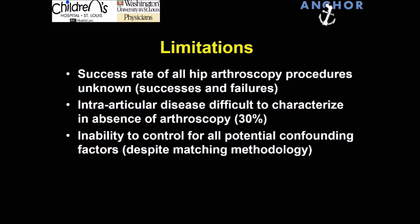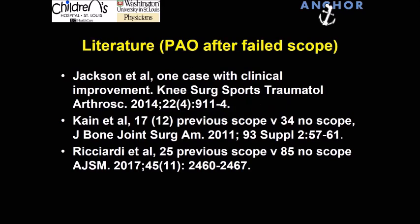Limitations of the study are significant. We don't have the success rate of all hip arthroscopy procedures being done — we're just looking at a subgroup that failed hip arthroscopy. Intra-articular disease staging is incomplete because only about 30% of patients had combined arthroscopy at the time of the PAO. We are unable to control for all potential confounding factors. In the literature, there is not much: a case report, a small series from Boston that did not show a difference between the two groups though it was relatively underpowered, and a recent study from HSS from Ernie Sink's group showing very similar results — that patients with a previous hip arthroscopy did not achieve optimal outcomes compared to those without.